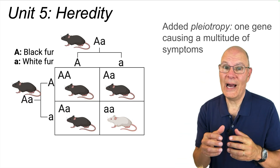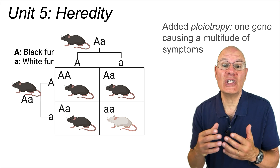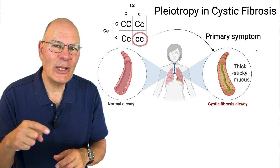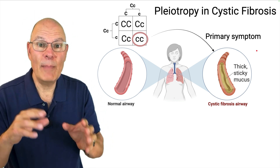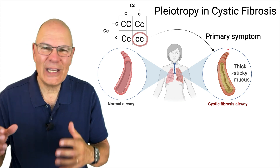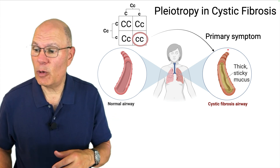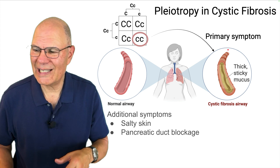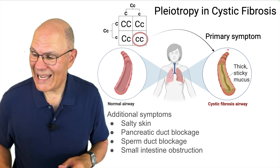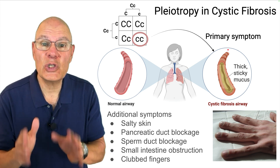In Unit 5 of AP Bio, heredity, the College Board added a new topic called pleiotropy — where one gene causes a multitude of symptoms. An example is the genetic disease cystic fibrosis. On the cellular level it involves the malfunctioning of a membrane transport protein, but on the organismal level it results in the accumulation of thick, sticky mucus in the lungs. That mucus can become infected, which is the main symptom. But since this is pleiotropy, additional symptoms include salty skin, pancreatic duct blockage, sperm duct blockage leading to infertility, small intestine obstruction, and a phenomenon called clubbed fingers. Super interesting stuff.